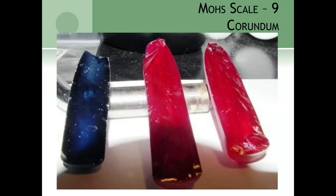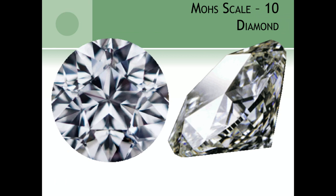Corundum is the mineral that rubies and sapphires are made from. It really comes down to which impurities are trapped inside, which shifts how light travels through it — so corundum can be red or blue. Technically, a ruby and a sapphire are the same mineral. Finally, at the very top is diamond — a ten on the Mohs scale. The only thing that can scratch a diamond is another diamond.